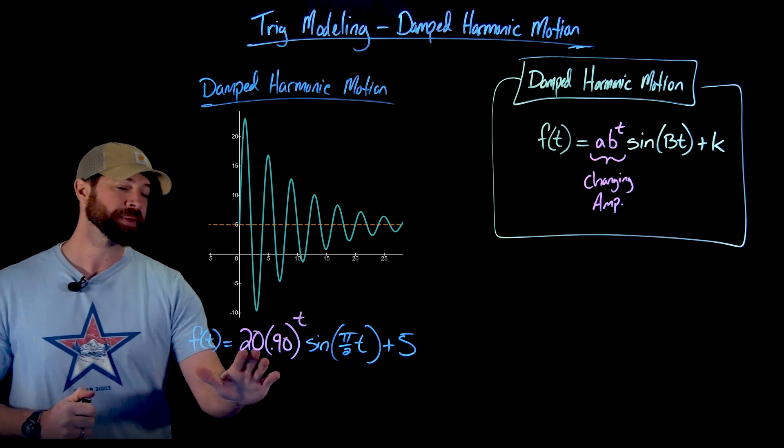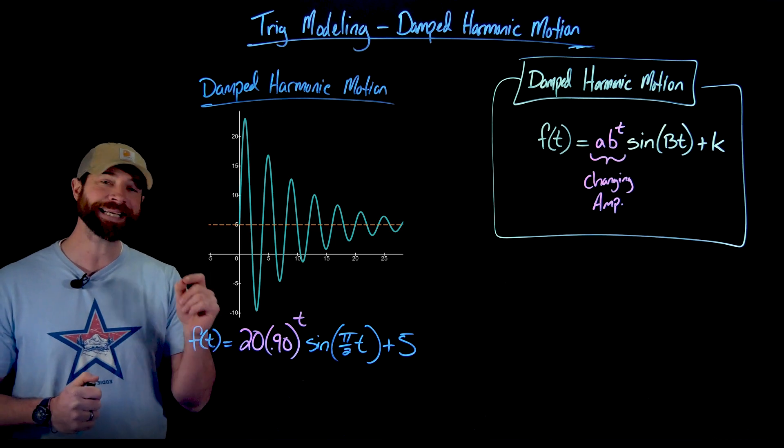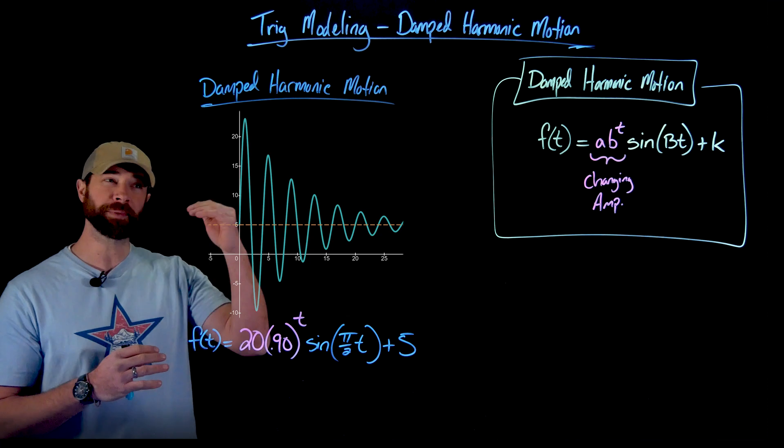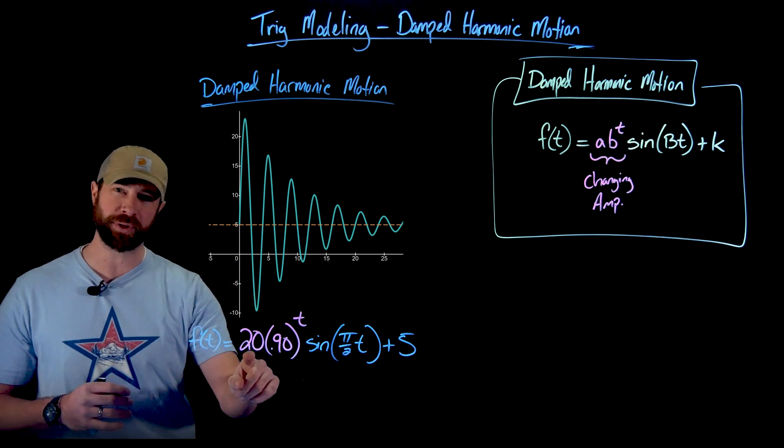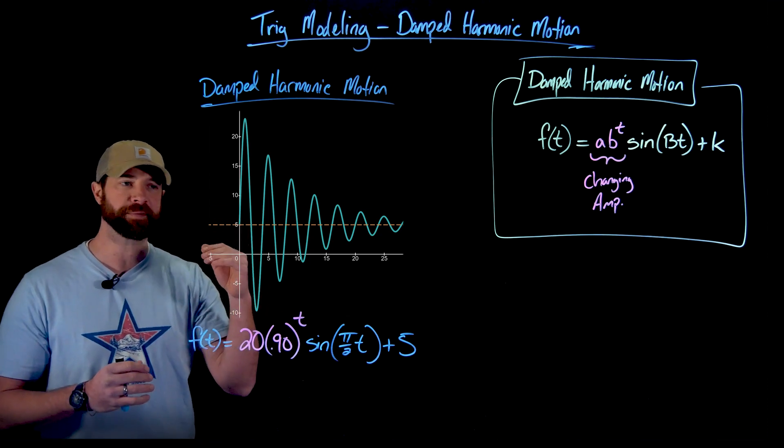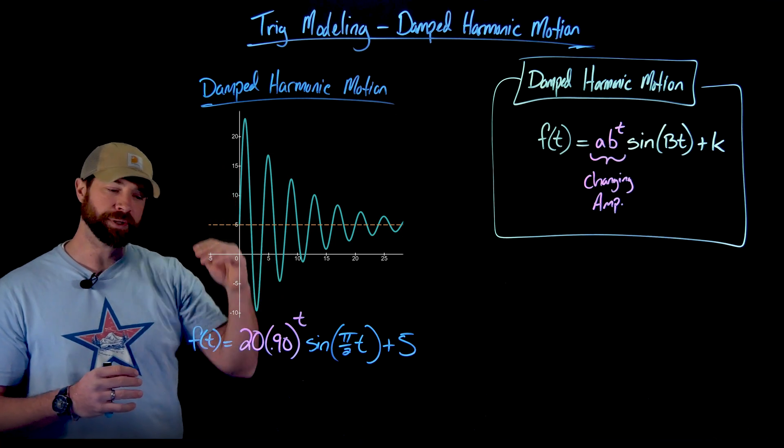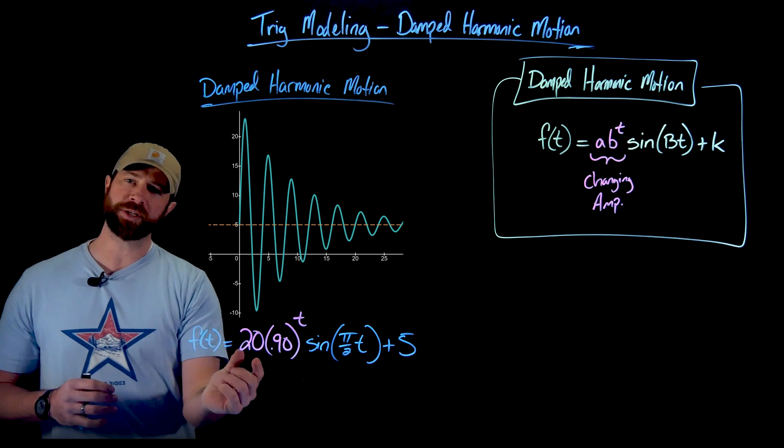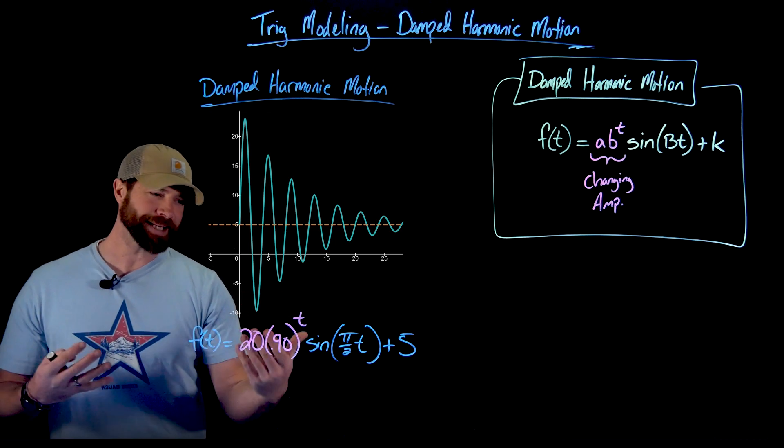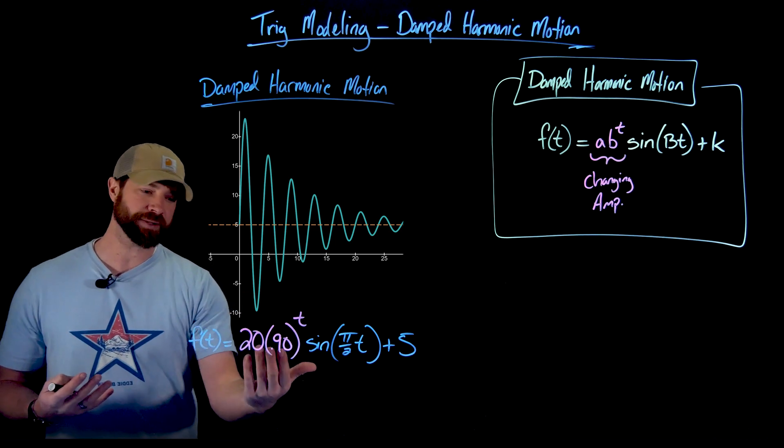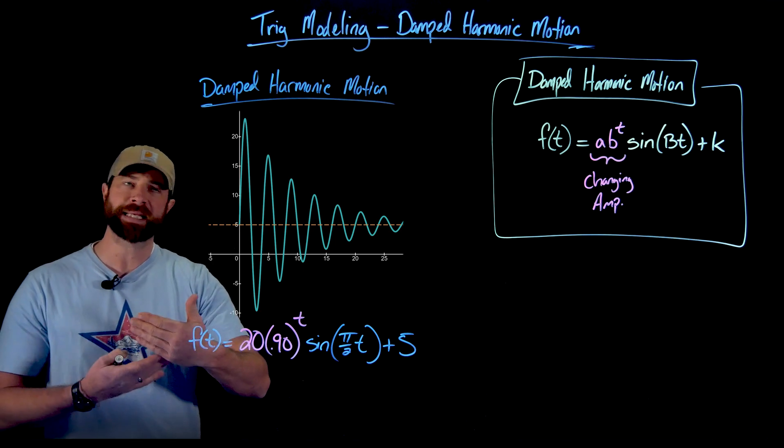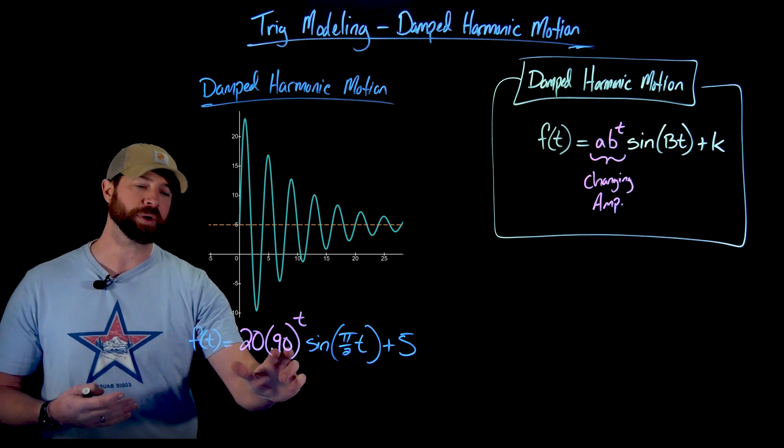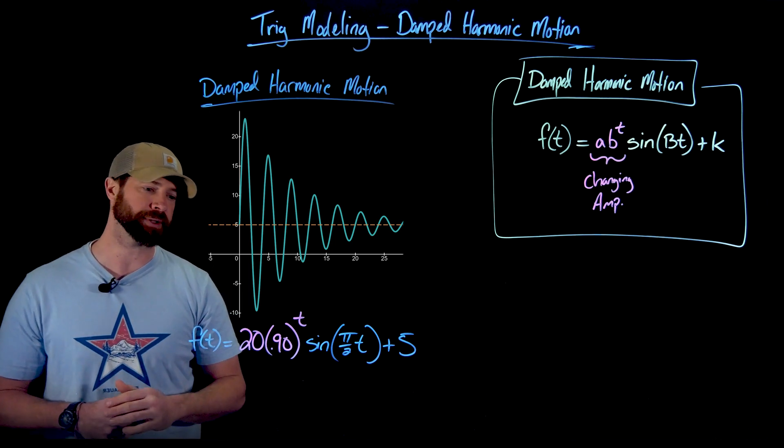But what's going on here as you can see is that when T is zero we have this amplitude of 20. We go up to 25, that's because we have an amplitude of 20 and a midline of 5. So that's our starting amplitude. But as time goes on this factor right here reduces the amplitude. In this case, if we thought of T as seconds, the way to interpret this would be that every second we lose 10% of our amplitude or we retain 90% of our original amplitude.